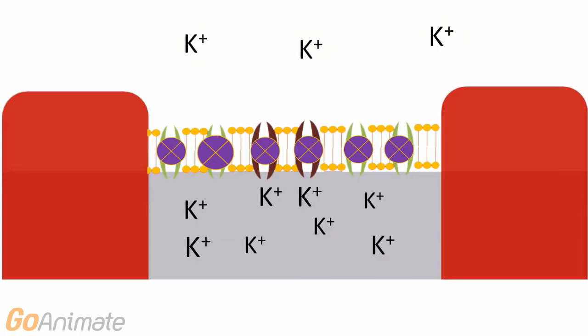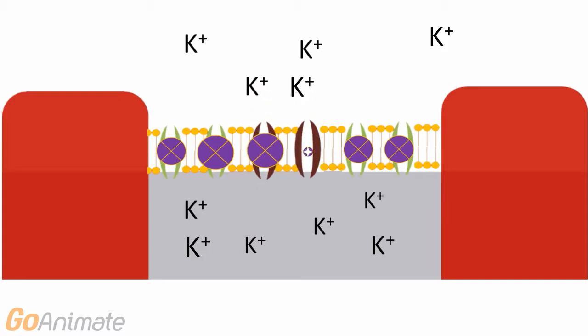There is also a potassium gradient with more potassium inside of the cell than out. Once the voltage reaches about positive 30 millivolts, the potassium gates take over and potassium moves out of the axon. This causes the area to repolarize for the next action potential.